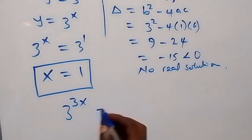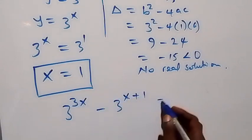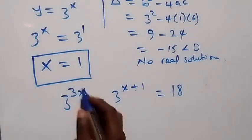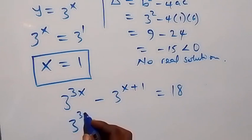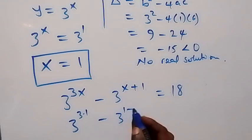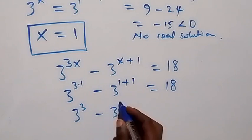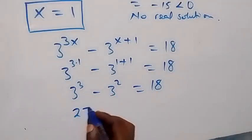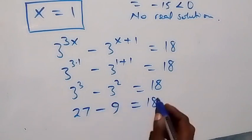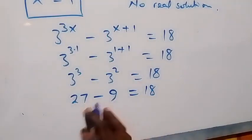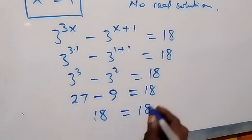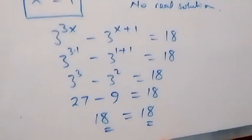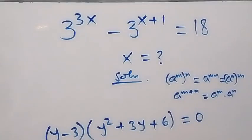We can check: we have 3 raised to power 3x minus 3 raised to power x plus 1 equals 18. When we put x equals 1, we have 3 raised to power 3 times 1, minus 3 raised to power 1 plus 1, equals 18. That is 3 raised to power 3 minus 3 raised to power 2 equals 18, giving us 27 minus 9 equals 18. Left-hand side equals right-hand side, so x equals 1 is confirmed.